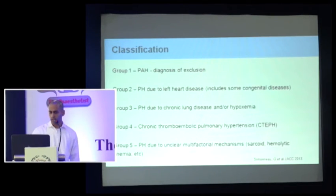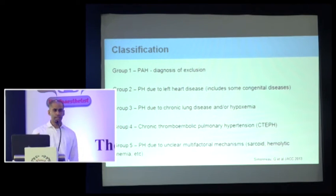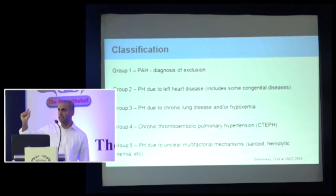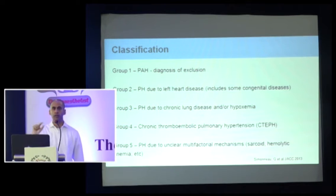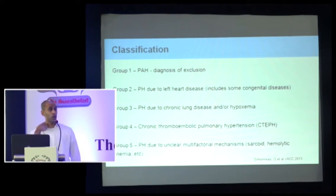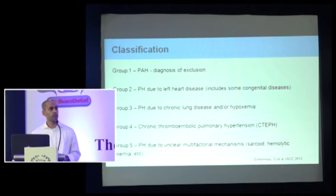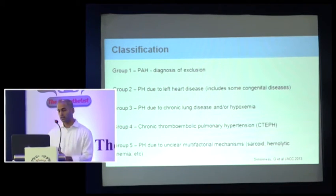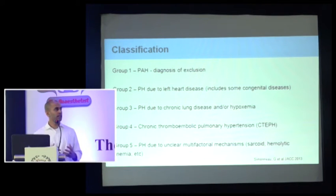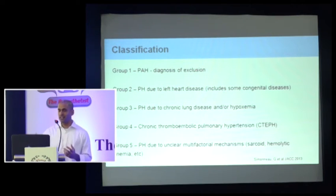This is a standard WHO classification. Group 1 is a diagnosis of exclusion — that's the PAH part, and that's the danger group. A group 1 patient is the one who will die on the table when you give one litre of saline bolus, or who codes about 15 minutes after intubation, going into acute RV ischemia and RV MI. PH due to left heart disease is group 2, PH due to chronic lung disease is group 3 — usually just pulmonary hypertension. Chronic thromboembolic pulmonary hypertension is group 4. Group 5 is a wastebasket diagnosis. Group 1 is the one you want to watch out for.